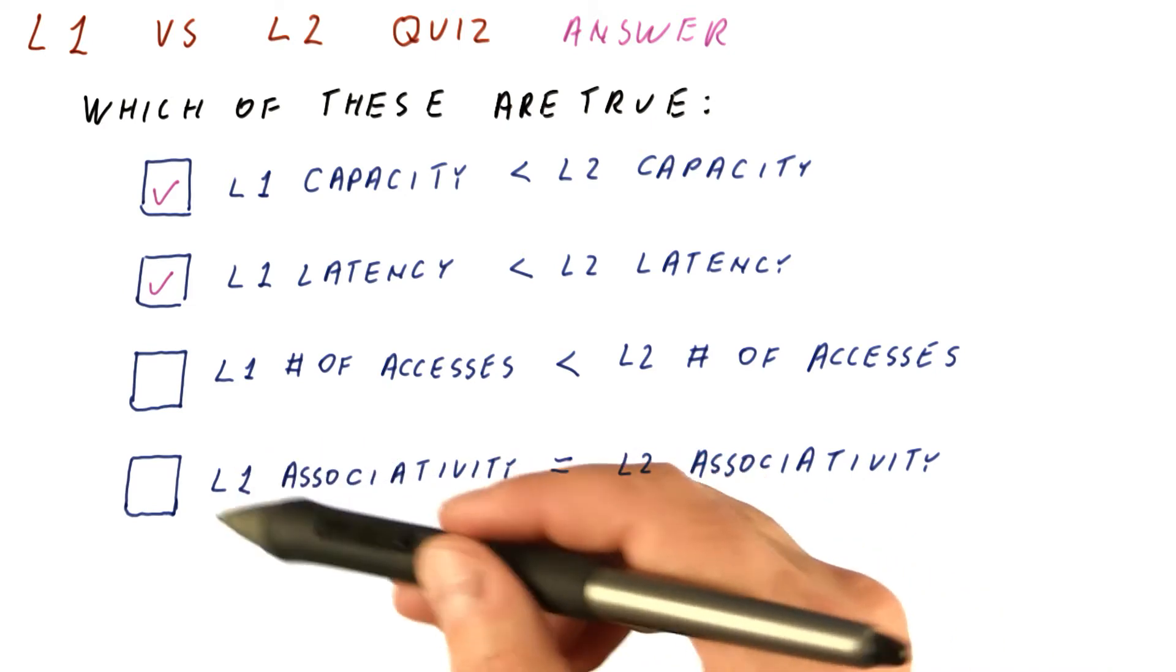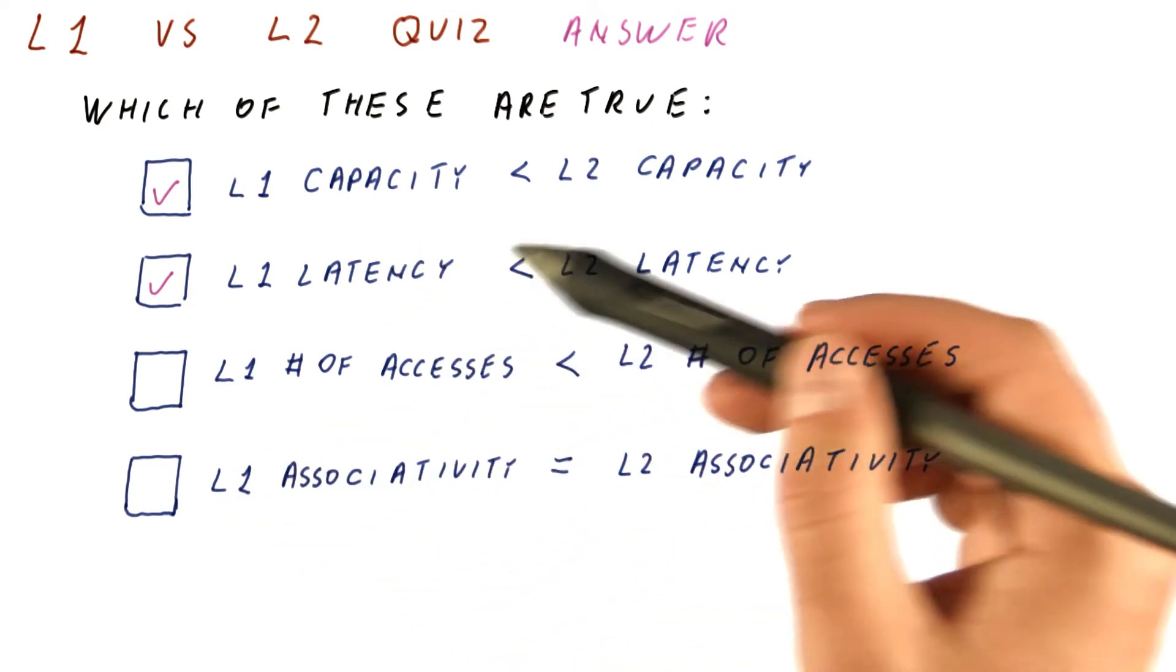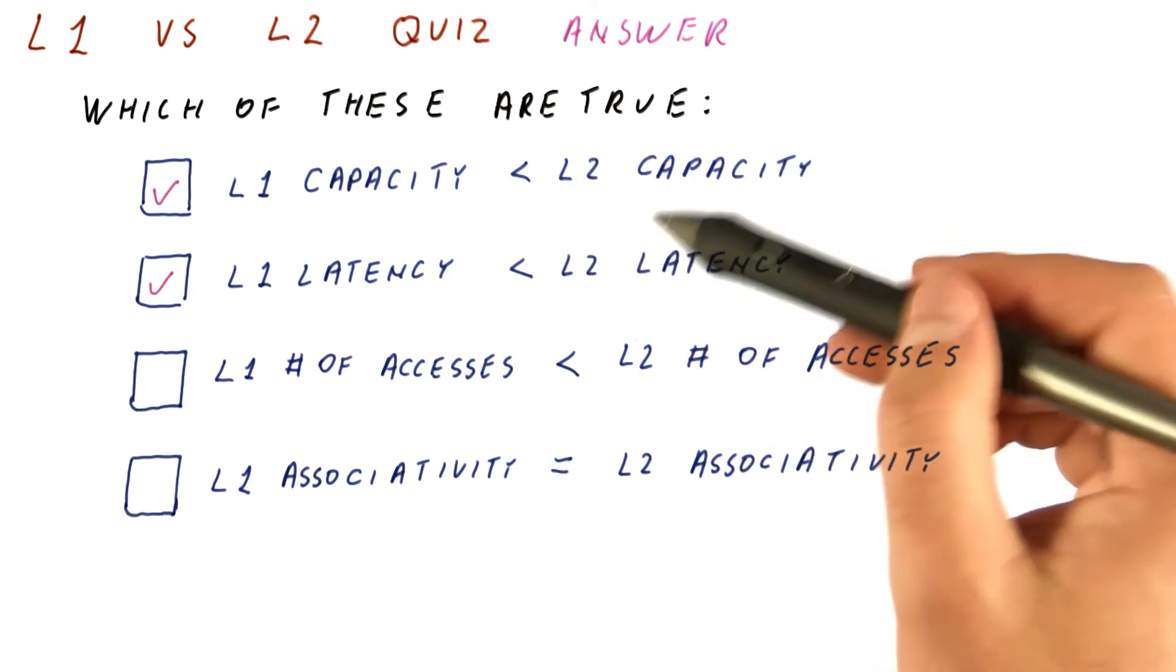Why? Well, because the L1 cache needs to have a low hit latency and need not have the capacity of the L2 cache.